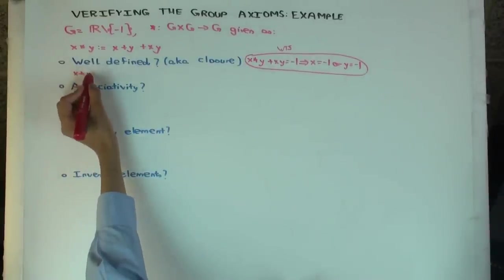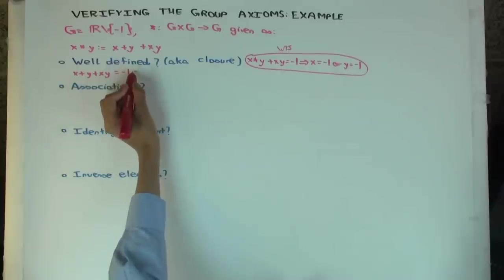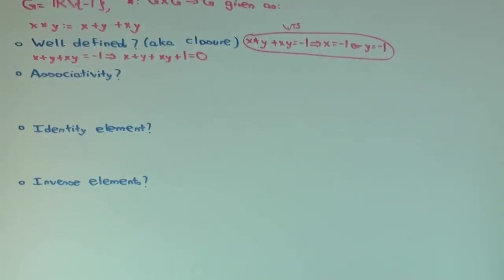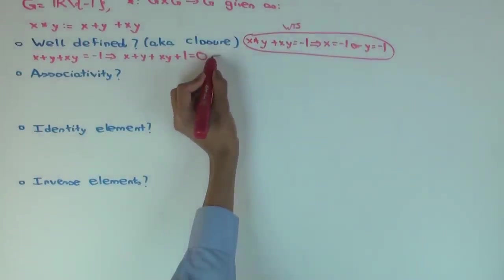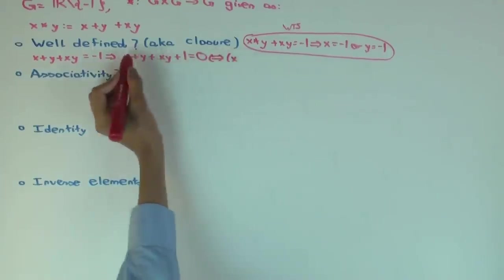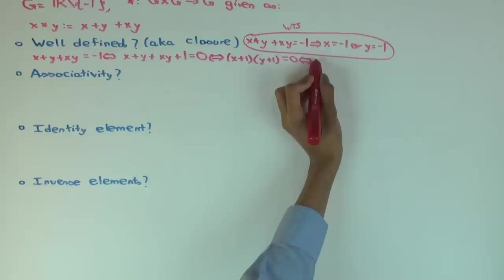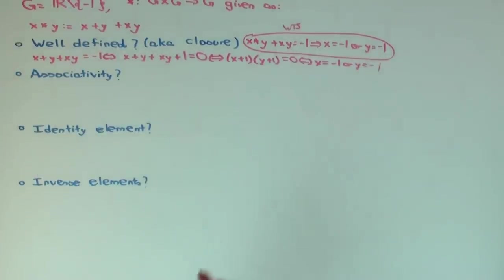So x plus y plus xy is negative 1. Let's bring everything to one side. Now can you factorize the left side? x plus 1 times y plus 1. Yeah, x plus 1 times y plus 1 is 0, which is if and only if x equals negative 1 or y equals negative 1. So we've done it, we've proved it. We've shown now that the operation is well defined from G cross G to G. Earlier it was just an operation from R cross R to R, but now we've shown that if you exclude minus 1 from the inputs, then minus 1 couldn't appear in the outputs.